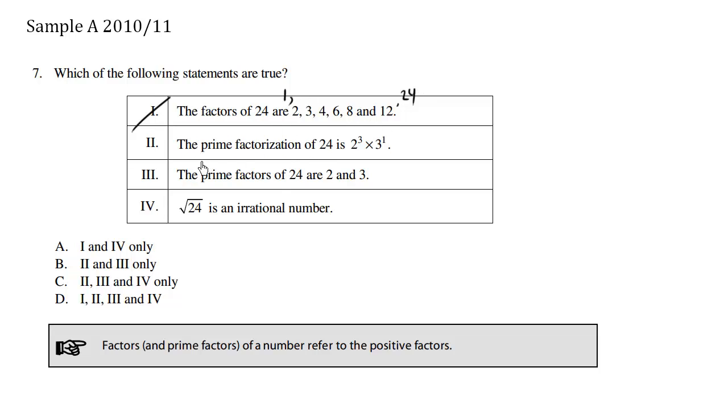Number 2. The prime factorization of 24 is 2 to the exponent 3 times 3 to the exponent 1. Let's test this out here. We have the number 24. Break it down. Prime factorization.